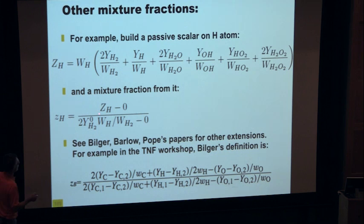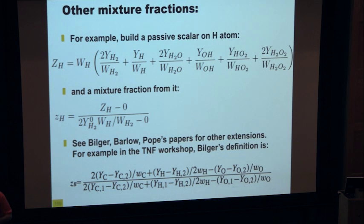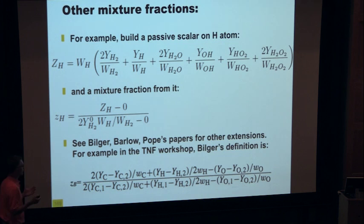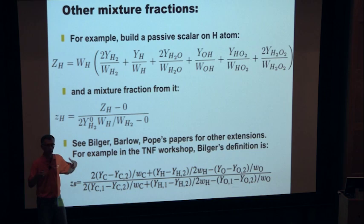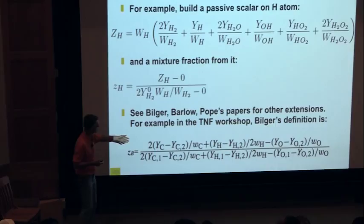People try to hybridize by mixing Z_H with other definitions, and the most famous is probably Bilger's definition — Bob Bilger is one of the famous figures in this field. He proposed a definition claiming it is one of the best you can use for Z. But none of them is equivalent to a real passive scalar, because this quantity does not diffuse uniformly. If you want to build a mixture fraction, you want equal diffusion coefficients, and none of these species diffuse in the same way. So none of these things are real passive scalars.